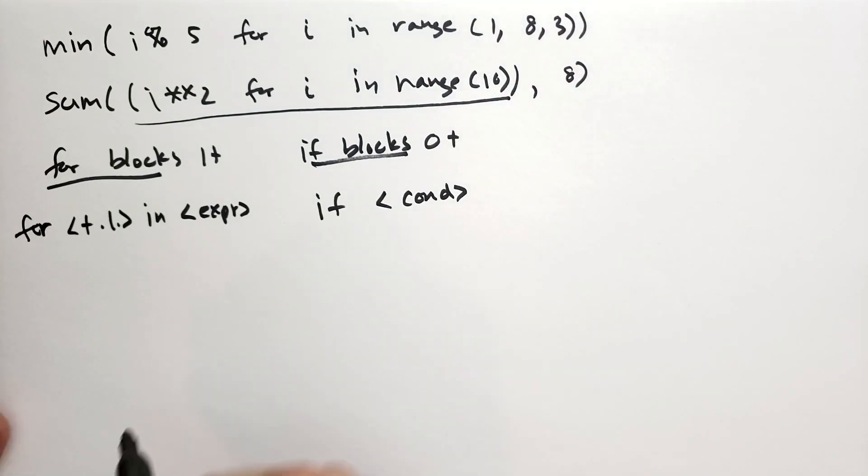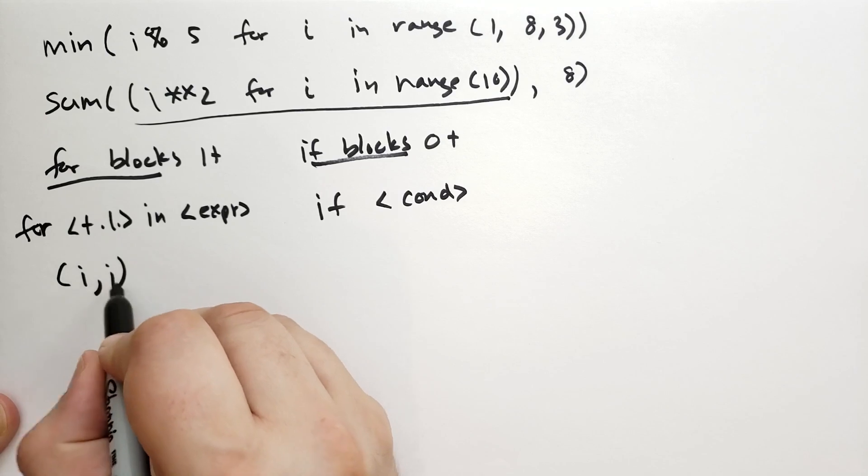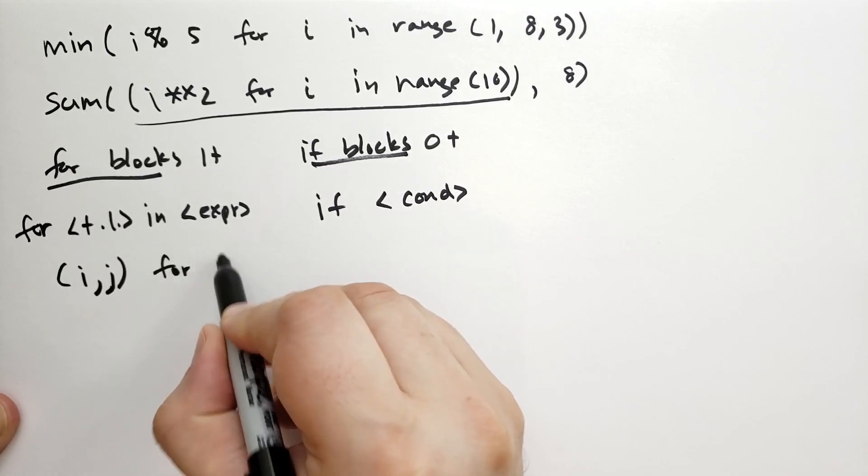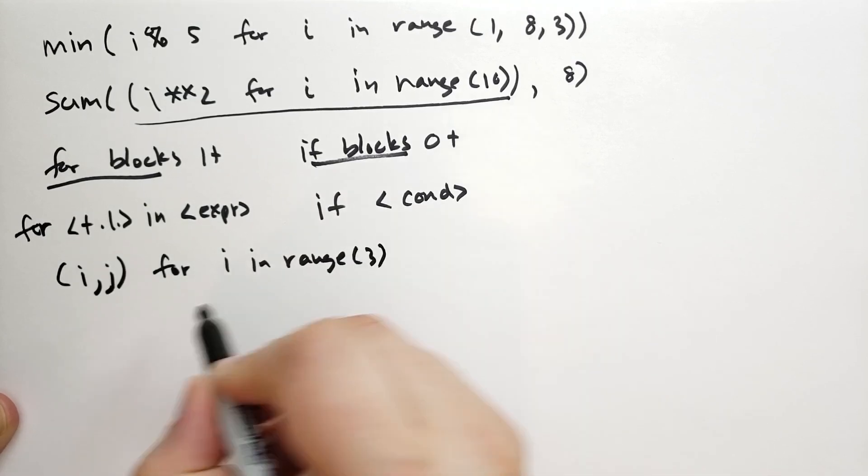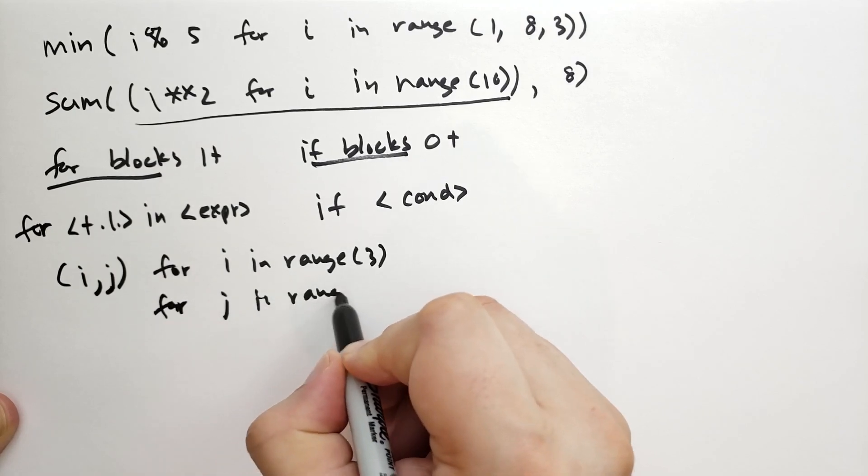Let me give you an example of generating a sequence of all of the i,j indices to a 3x3 matrix. So (i,j) for i in range 3, for j in range 3.